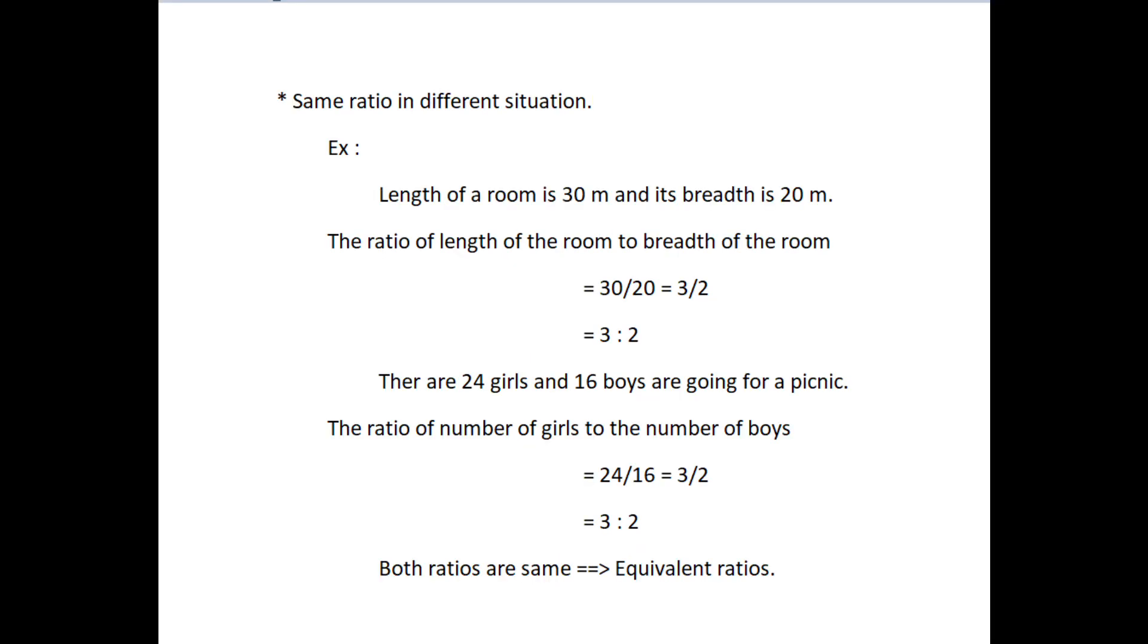Next is the same ratio in different situations. For example, the length of a room is 30 meter and its breadth is 20 meter. The ratio of the length of the room to the breadth of the room equals 30 divided by 20 which equals 3 divided by 2 which equals 3 is to 2.